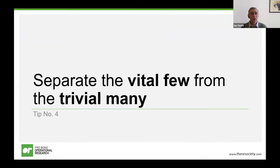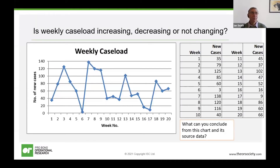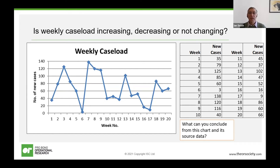Often we're also interested in understanding what's happening over a period of time. I did some work with a victim support group whose senior management team were trying to work out if caseload was increasing, decreasing or not changing — they were concerned about whether they had enough staff to support victims of crime. They weren't actually plotting weekly caseload at all; they were just logging it in a spreadsheet. The first thing we did was turn it into a line graph. What can you conclude from this chart? Can you say whether weekly caseload is increasing, decreasing or not changing over that 20-week period?